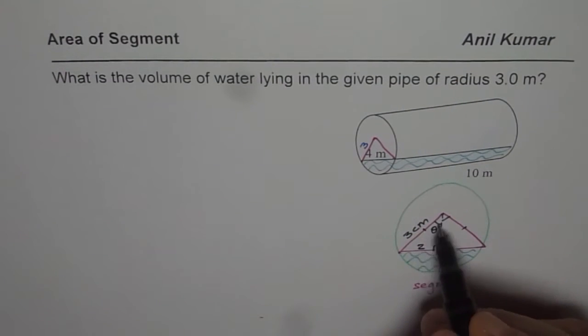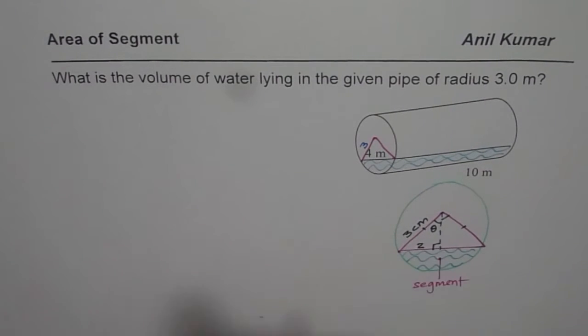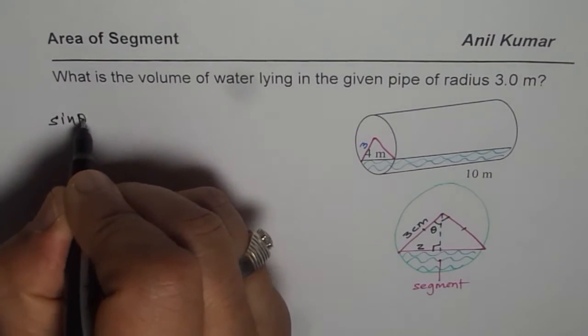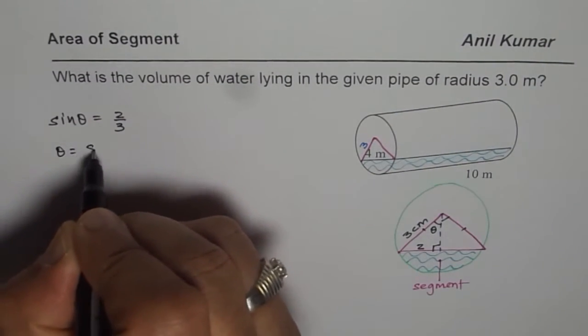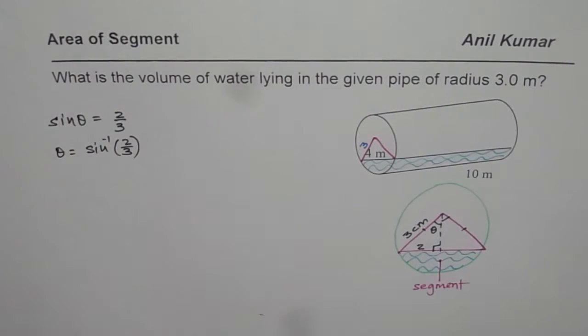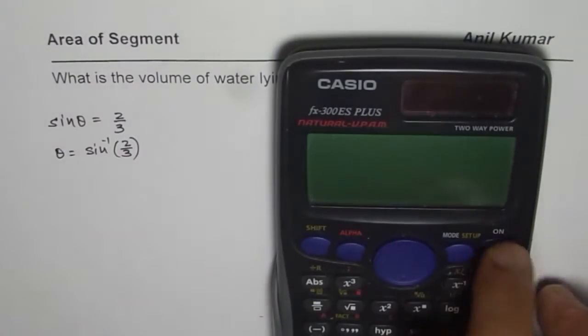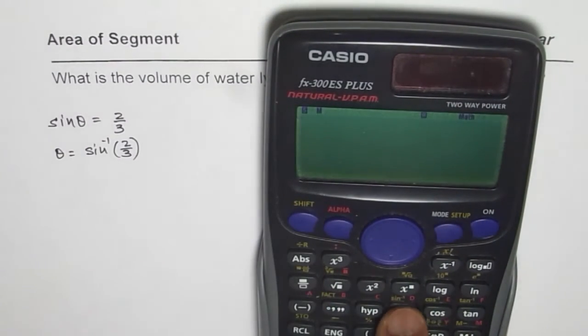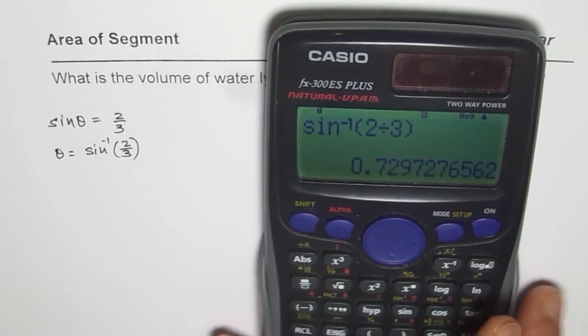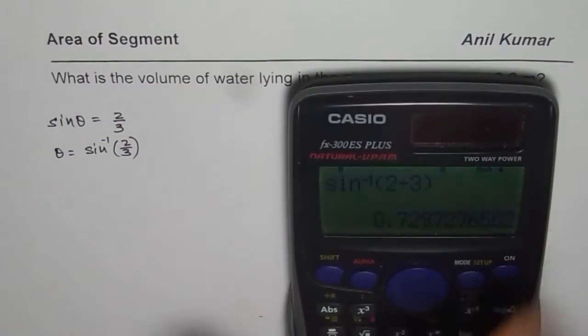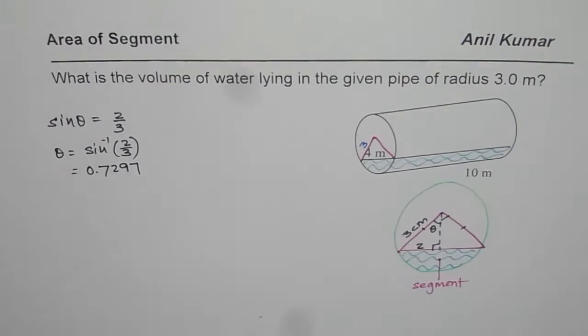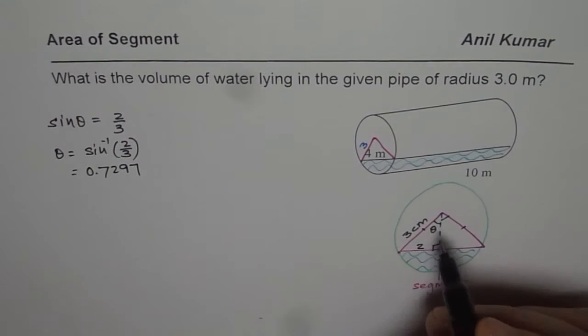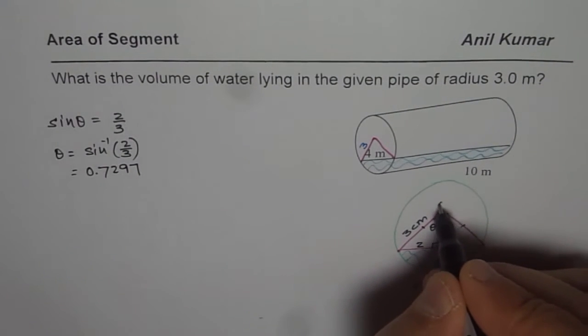Let's find the angle first. So we know from this triangle, we say sine theta equals two over three. That means theta equals sine inverse of two over three. So let's find how much theta is. We have sine inverse within brackets two divided by three equals 0.7297. It's good to take four decimal places. It is all in radians.